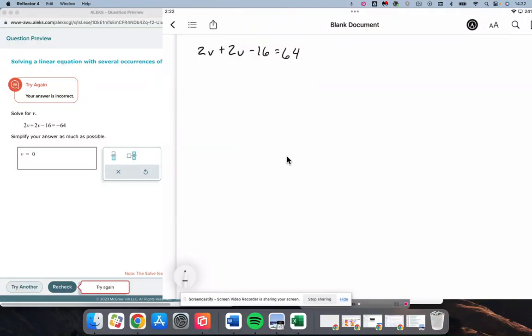Okay, so I made a typo when I did this problem earlier, and I put 16 on the right side instead of negative 64. Made a typo again, negative 64, not 64.